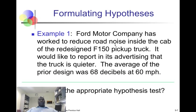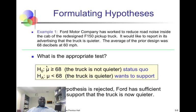Here's an example: Ford Motor Company has worked to reduce road noise inside the cab of the redesigned F-150 pickup truck and would like to report in advertising that it is now quieter. The average of the prior design was 68 decibels at 60 miles per hour. The null hypothesis is that it's either 68 decibels or more — it's not quieter than before. The alternate hypothesis HA is that the average is now less than 68 decibels. If we reject H0, we support HA. If we do not reject H0, we are not supporting HA.